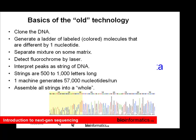Quickly, in old-school sequencing you clone the DNA, generate a ladder of colored molecules of different sizes, separate by size, elute through a capillary system or gel, detect the fluorochrome, and get sequences of 500 to 1,000 letters long. The problem is that even with the latest capillary sequencing you can only do 96-well plate samples at a time — only about 100 samples at once — and it takes a few hours. That's been one of the bottlenecks of the old technology.